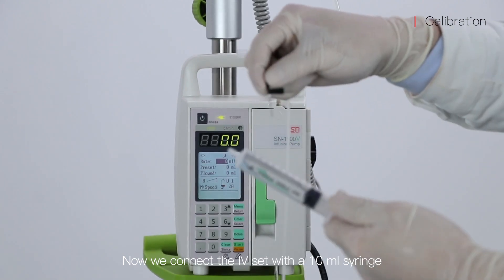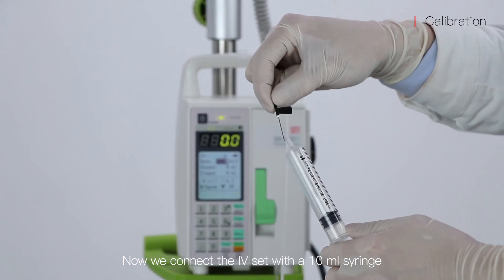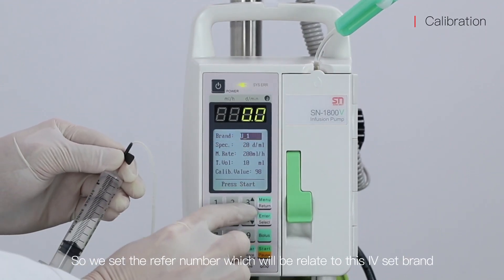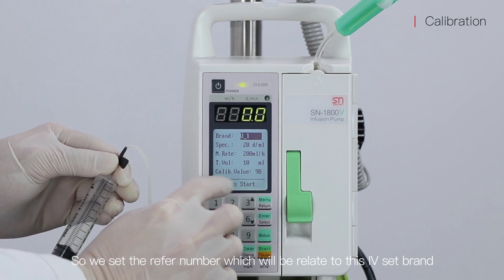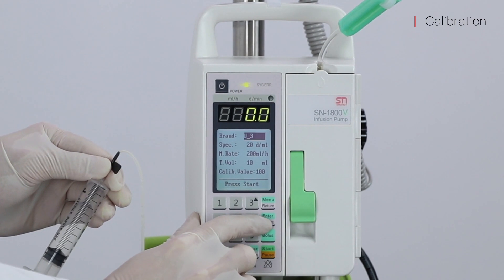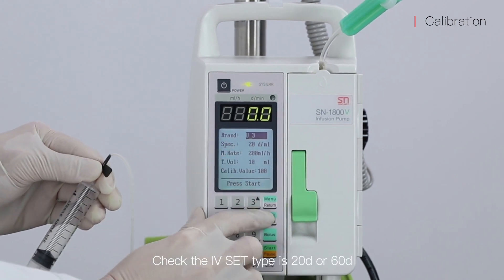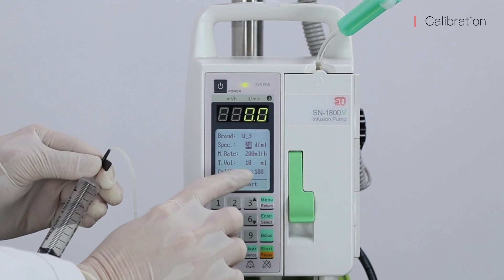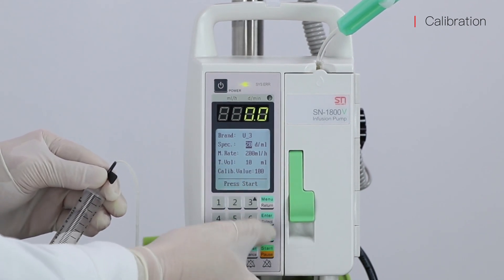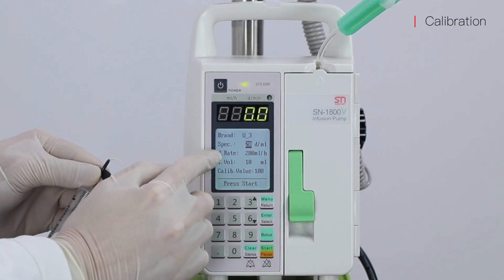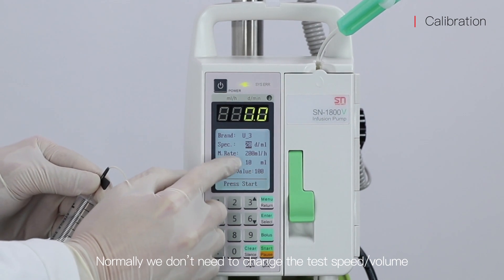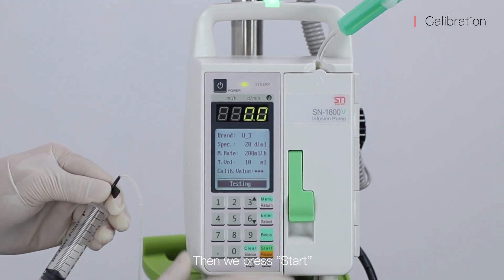Now we connect the IV set with a 10ml syringe. We set the reference number which will be related to this IV set brand. For example, we set U3. Check the IV set type is 20 drip or 60 drip. Normally we don't need to change the test speed and test volume. Then we press start.